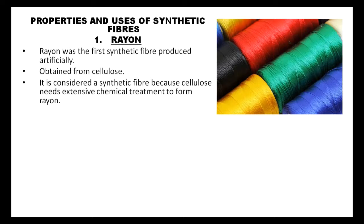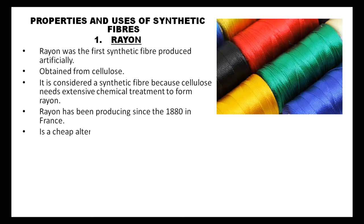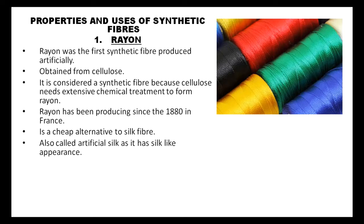Rayon has been produced since the 1880s in France. It was developed as a cheap alternative to silk fiber. It is also called artificial silk as it has a silk-like appearance.